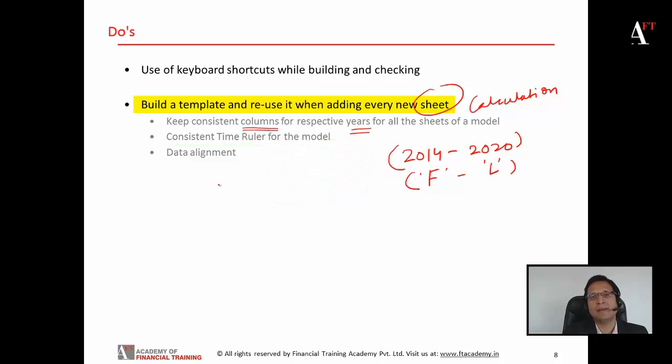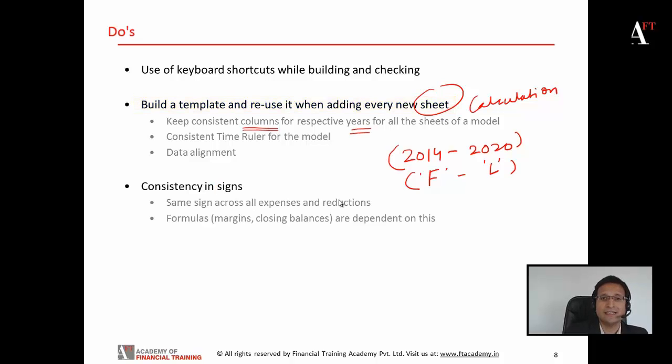Data alignment: the numbers should generally be aligned to the right hand side, the text value should be aligned to the left hand side, and the headings can be centrally aligned or left aligned. Consistency in signs: always ensure that you have the same sign across all the expenses and reductions. This is important because your formulas are dependent on this. Formulas like margins or closing balances are consistent only if you follow a consistent sign convention throughout the model.